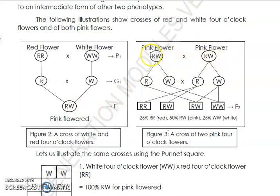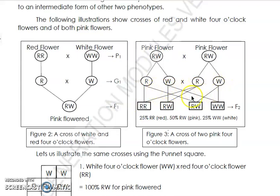For Figure 3, a cross of two pink four o'clock flowers: we use RW as the genotype for pink. Crossing RW × RW gives us: R×R = RR, R×W = RW, W×R = RW, W×W = WW. So we have RR, RW, RW, and WW. Out of four offspring, one is RR — that is one out of four.